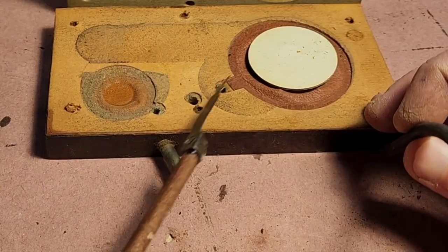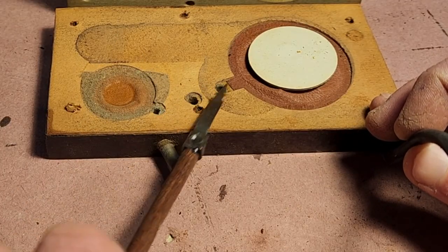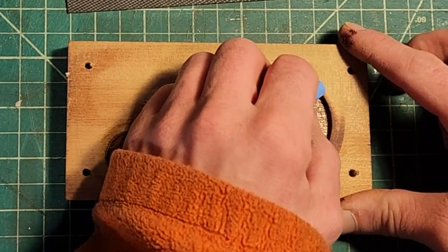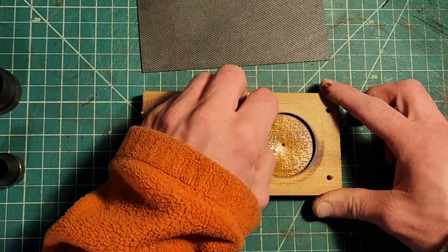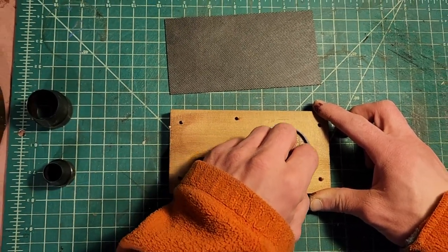While that dries, we'll take a look at this little guy. The pouch board. I've stripped off all the old leather gasket and pouches and sanded it flat. Now, we'll make a new gasket.